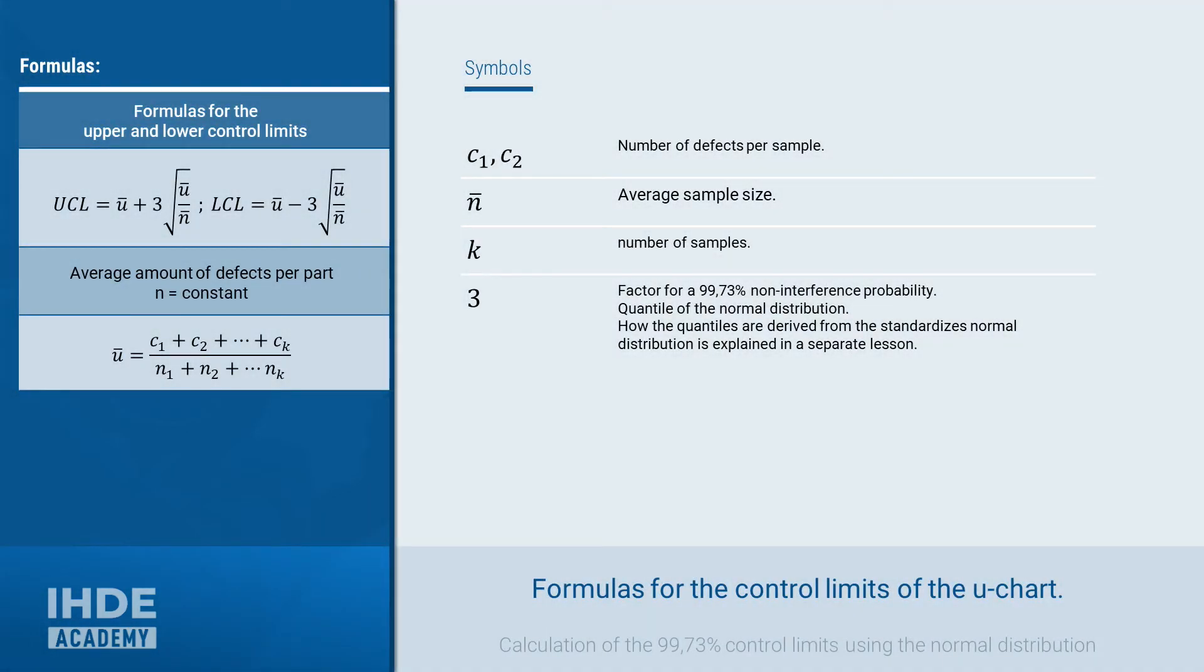For the calculation of the control limits, the average number of defects per part, u bar, is required. This results from the quotient of the sum of all defects found and the sum of all tested parts. Here again the note that the sample size can be different for each sample. For simplicity, the sample size remains constant in this example.